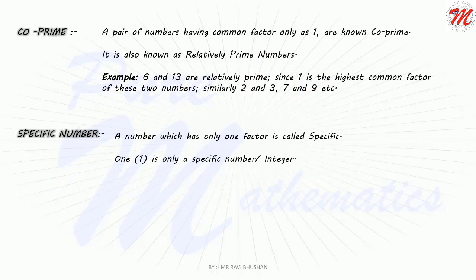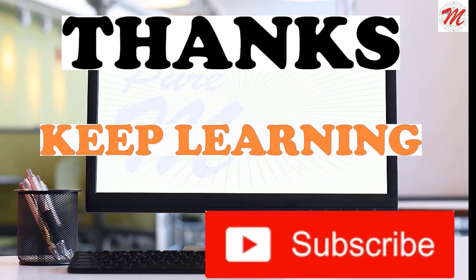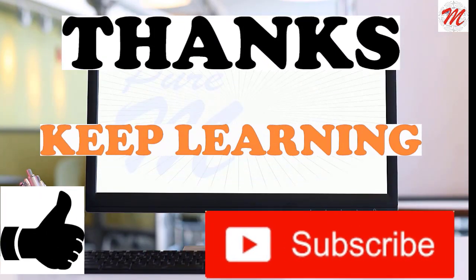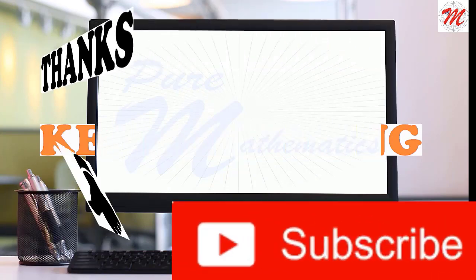Now, specific numbers. When discussing prime numbers, we noted that 1 has only one factor — itself. So 1 is placed into a category called specific integers. I hope you enjoyed and learned new facts. Keep watching for new videos. Thank you.